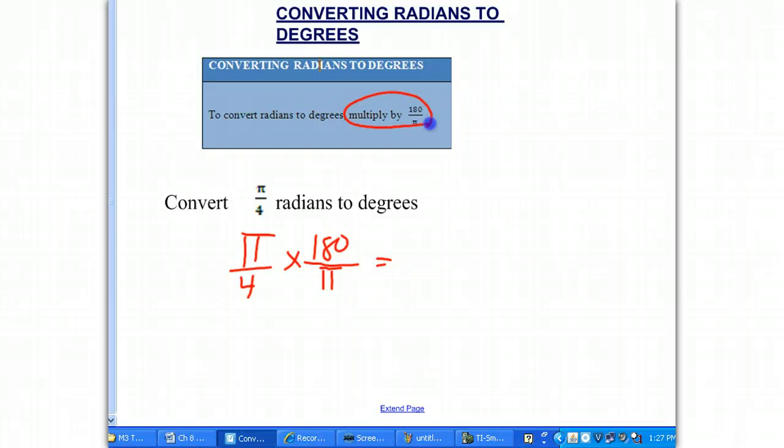Now, this is pretty simple, because notice how the π's cancel out. And, 4 goes into 4 once, and 4 goes into 180 forty-five times. So, we get 45 degrees. So, π over 4 radians is equal to 45 degrees.